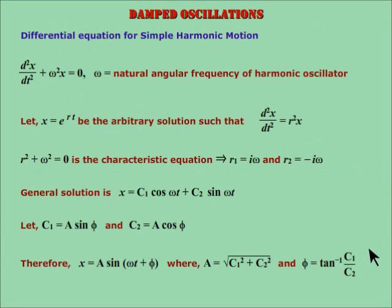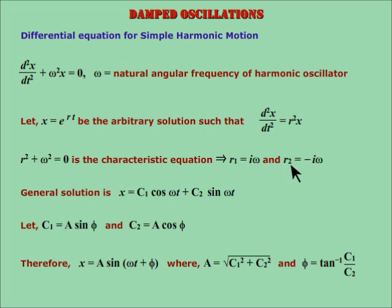From this knowledge, we will try to solve the differential equation for simple harmonic motion. The differential equation is as shown, where omega is the natural angular frequency of the oscillator. Let the arbitrary solution be x equal to e to the power rt. The characteristic equation gives r1 equal to i omega and r2 equal to minus i omega. The general solution is as shown. The roots are complex and the general solution is sinusoidal in nature. This explains why SHM is sinusoidal in nature.